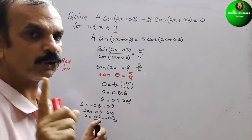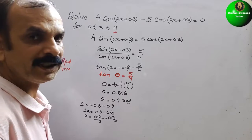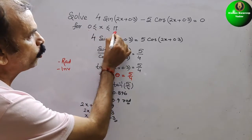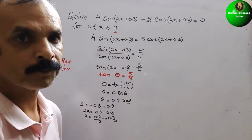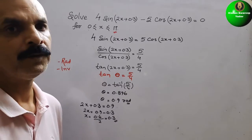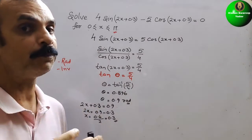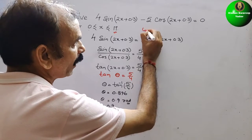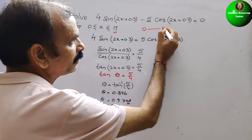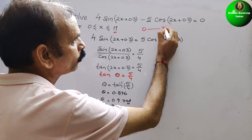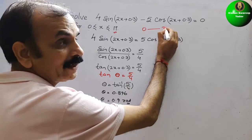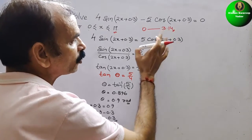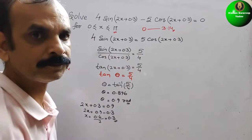For finding all solutions, we note that the range is 0 to π, and π = 3.14, so x values must lie between 0 and 3.14.